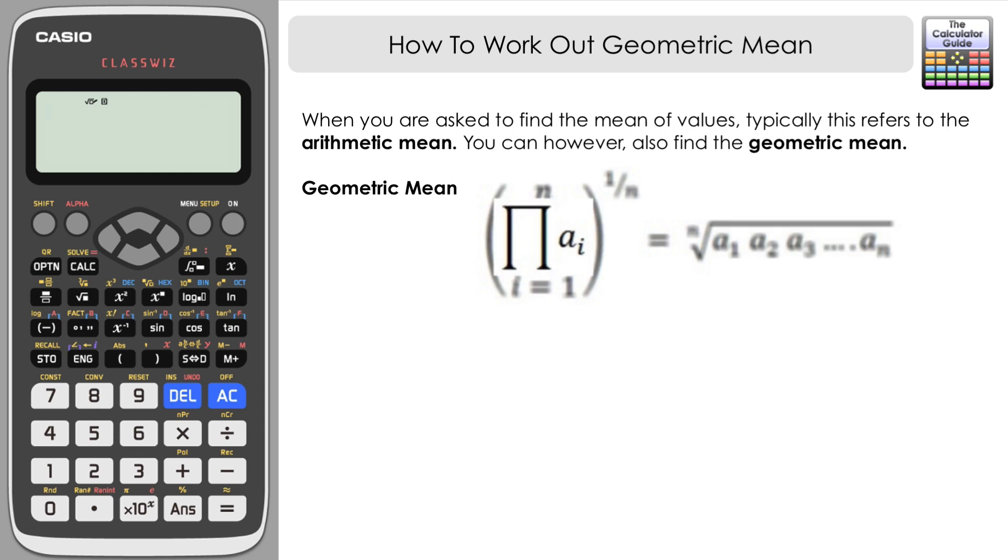So what this is really saying is it's the product of your values. In this case your a values from the first one up until the nth one, the last one. And then what we do is we raise that to the power of one over n, one over the number of values.